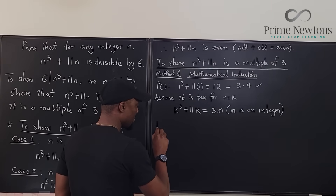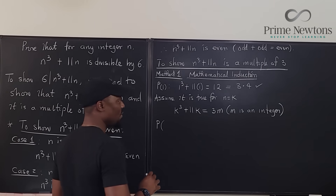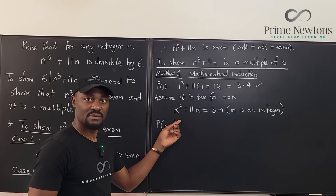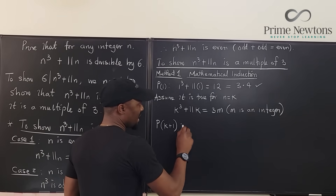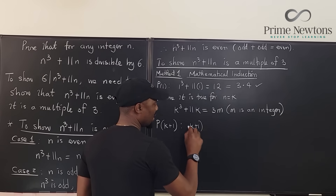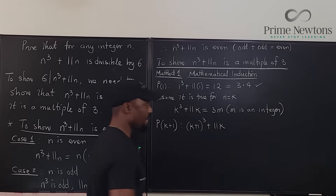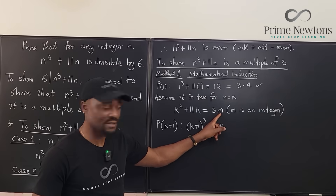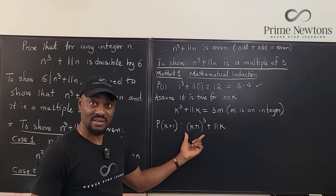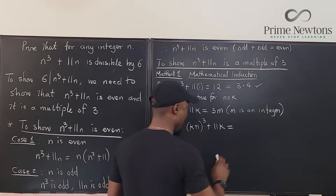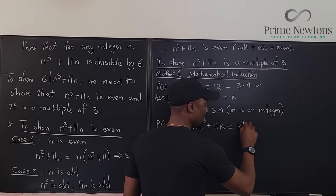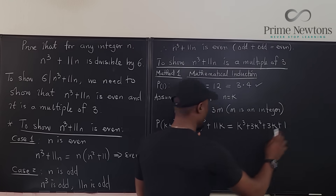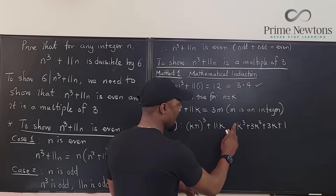For the proposition when n equals k plus 1, we're going to have (k+1) cubed plus 11(k+1). We need to show that it is a multiple of three. We expand using Pascal's triangle: (k+1) cubed equals k cubed plus 3k squared plus 3k plus 1. Then distributing 11(k+1) gives 11k plus 11.